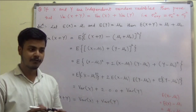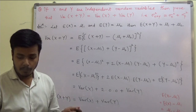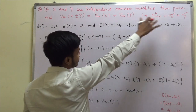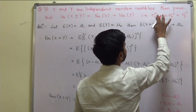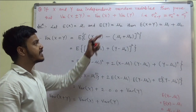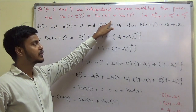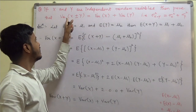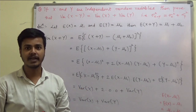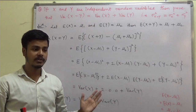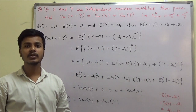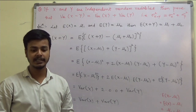I want you to solve one property: variance of X minus Y is also the same — that is, variance of X minus Y is equal to variance of X plus variance of Y. Solve this property on your own. I hope you are getting these properties nicely. Thank you for watching this learning video and have a good day. Thank you.